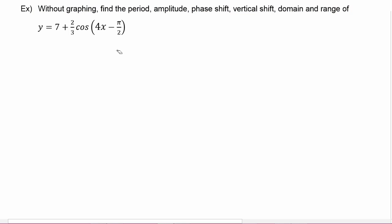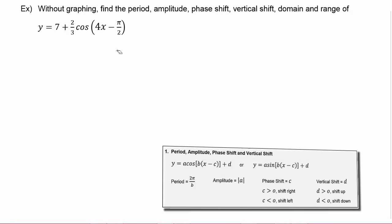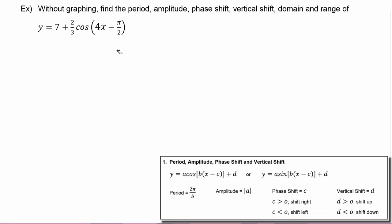Now one of the first things you'll want to do is rewrite the function so it's exactly in the form given in the summary box. So we could rewrite this as 2/3 times the cosine. Now we have to factor out the 4. So the 4 is going to come out and we're going to have x minus, well think about it like this.